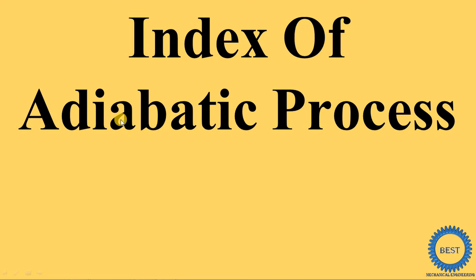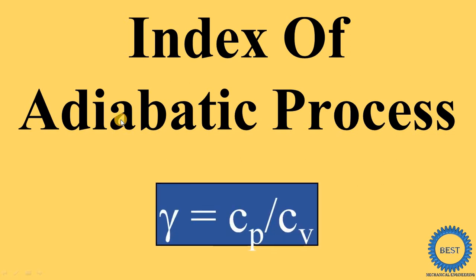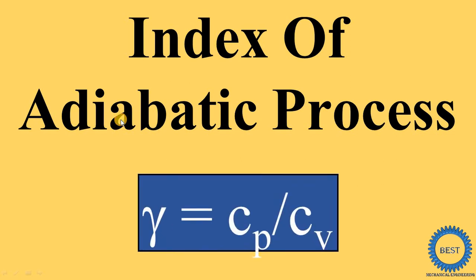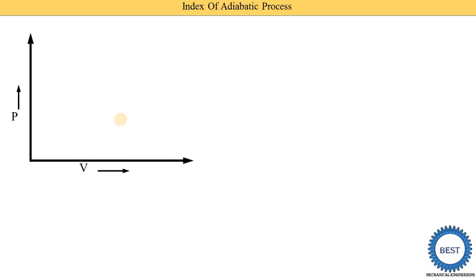In this video we derive the equation of the adiabatic index gamma, which is equal to Cp upon Cv. First, we understand the basic nomenclature related to the equations.